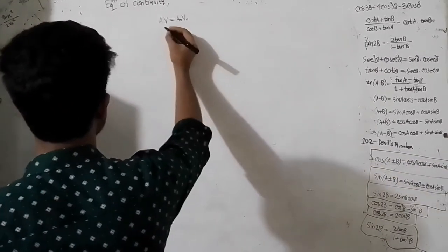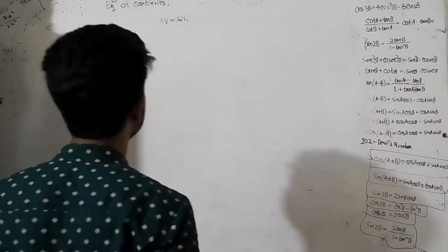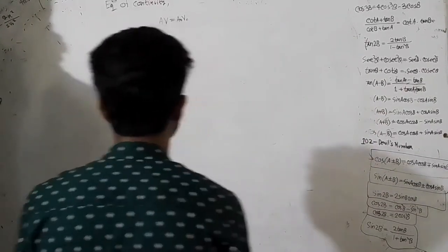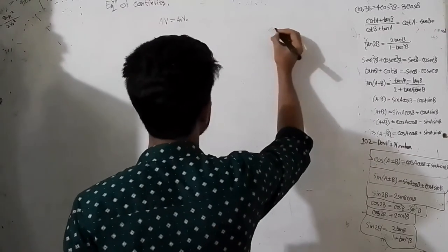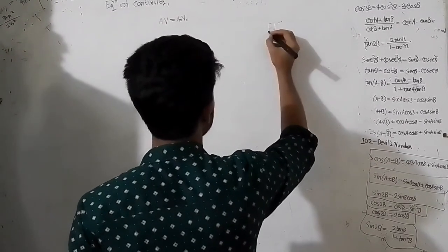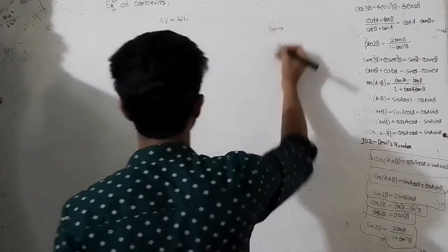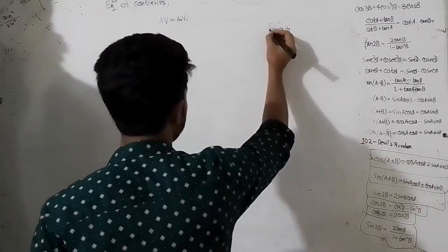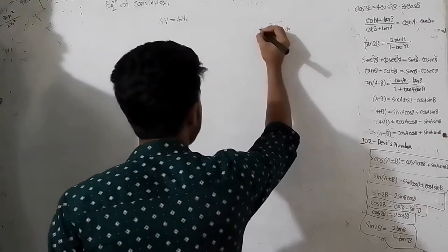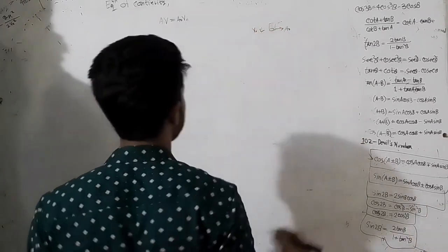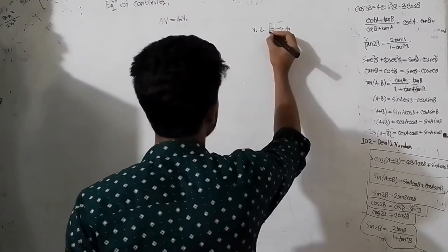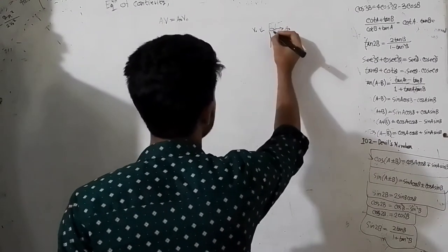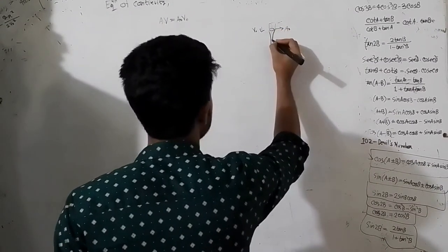This is A0 which is initial velocity and V0 which is initial velocity. A0 is called this cross-sectional area and this is called V0.